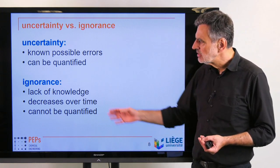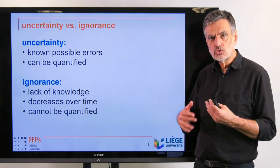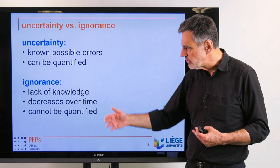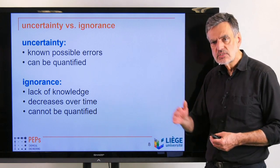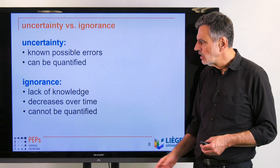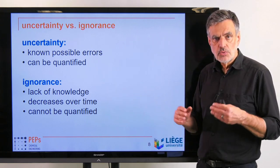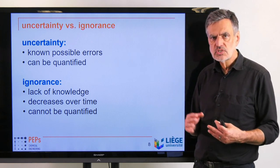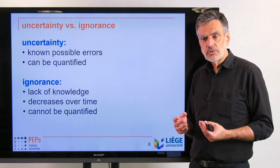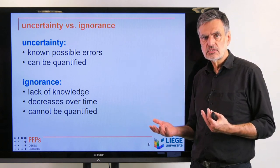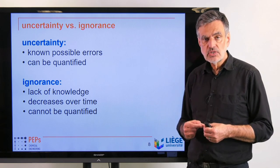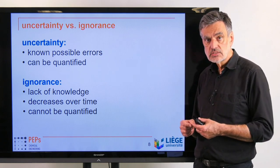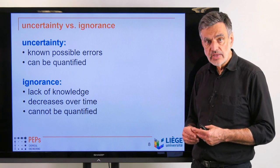This inability to predict the future means we need to take two different effects into account. On one hand, uncertainty — which relates to known possible errors that can be quantified or at least estimated. For example, we know that population figures published in official documents for a certain country have a certain uncertainty, plus minus some thousands, and we can account for that in our estimates.